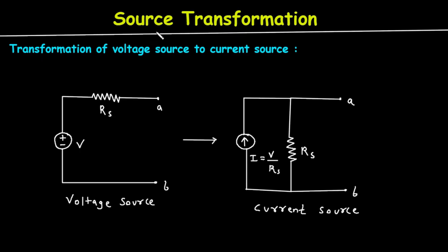What is source transformation? As we know, a source will be either a voltage source or a current source. Transformation means we are converting from a voltage source to a current source, or from a current source to a voltage source. First, we will see the transformation of a voltage source to a current source.